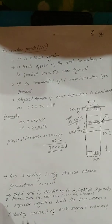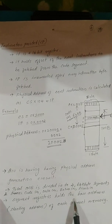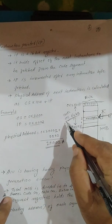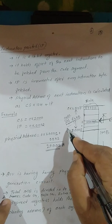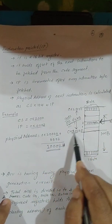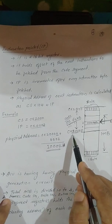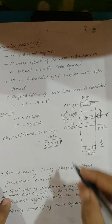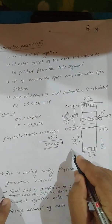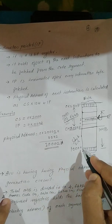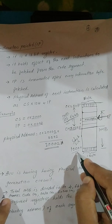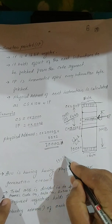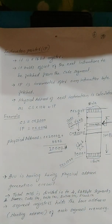The segment registers hold the base address — that is, the starting address — of each segment memory. For the code segment memory, its base address is 20000H and the first four digits (2000) are stored in the Code Segment register. Similarly, if a stack segment starts at 10000H, then 1000 is stored in the Stack Segment register. Don't confuse segment registers with segment memory: segment memory is external to the processor, while segment registers are inside the Bus Interface Unit of the microprocessor.